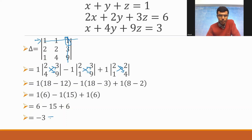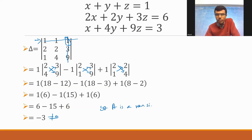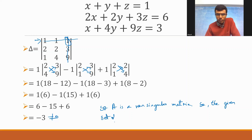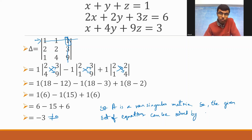This delta is not equal to zero, so A is a non-singular matrix. Cramer's rule can only be applied when delta of A is not zero — if this delta had been zero, Cramer's rule cannot be applied. Since A is a non-singular matrix, the given set of equations can be solved by Cramer's rule.